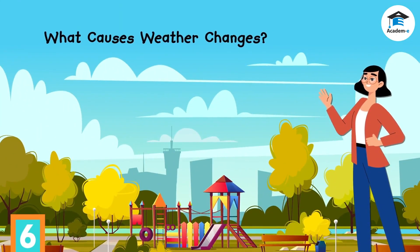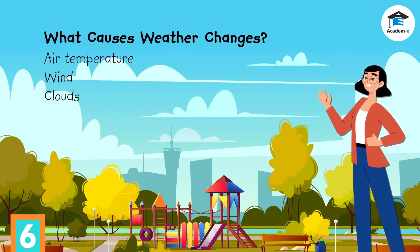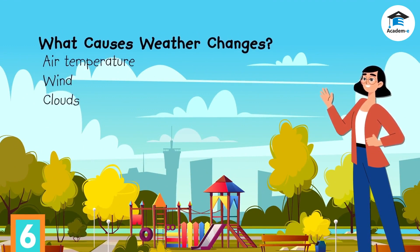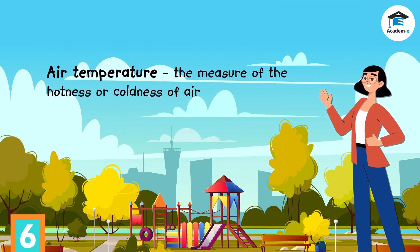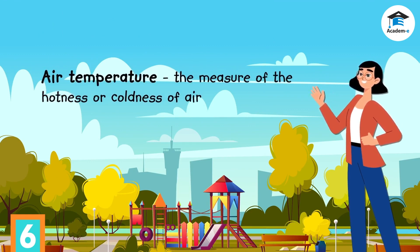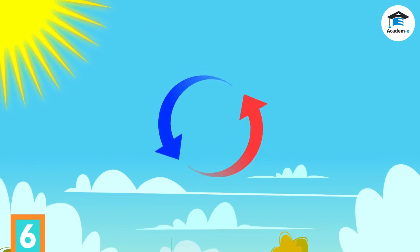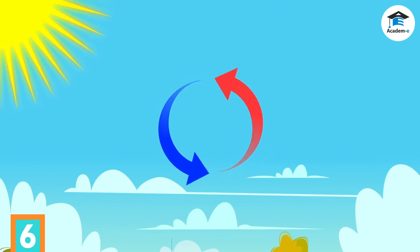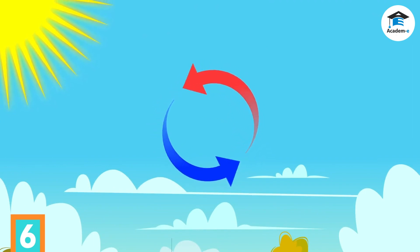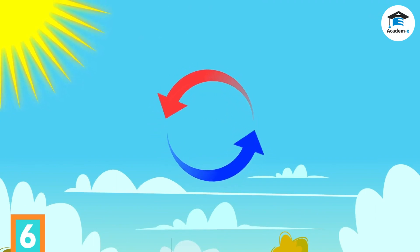Changes in weather are caused by changes in the atmosphere. These changes are caused by air temperature, wind, and clouds. Air temperature is a weather element — it is the measure of the hotness or coldness of air in the atmosphere. The sun powers up the weather as its rays warm the air in the atmosphere.